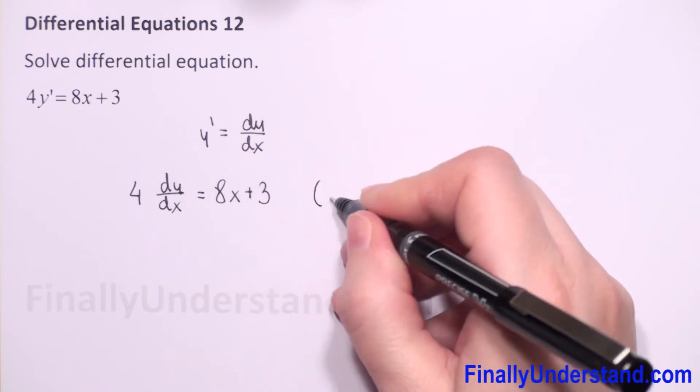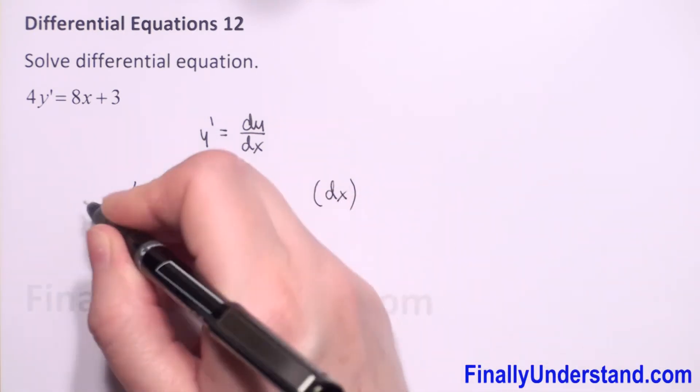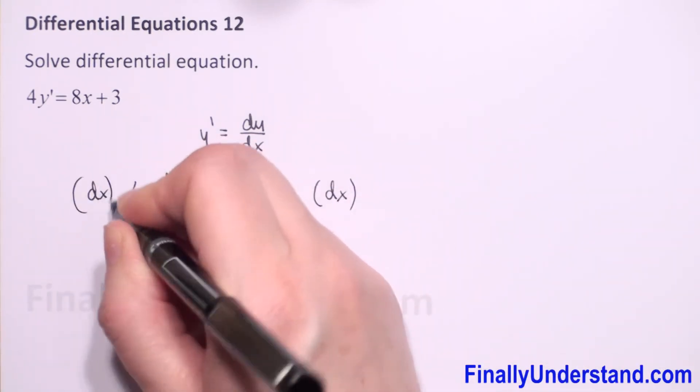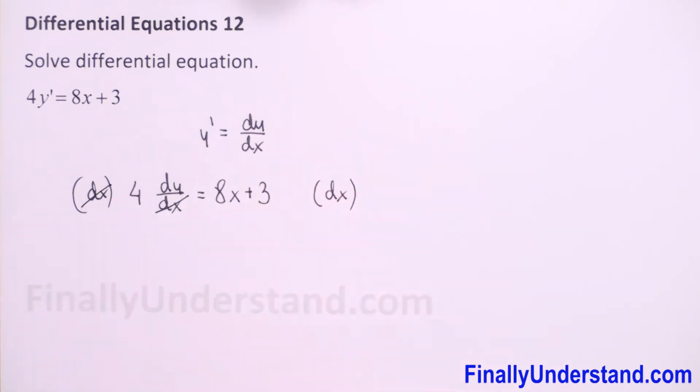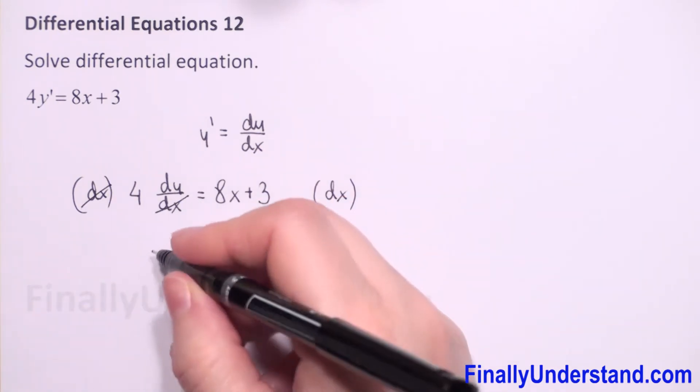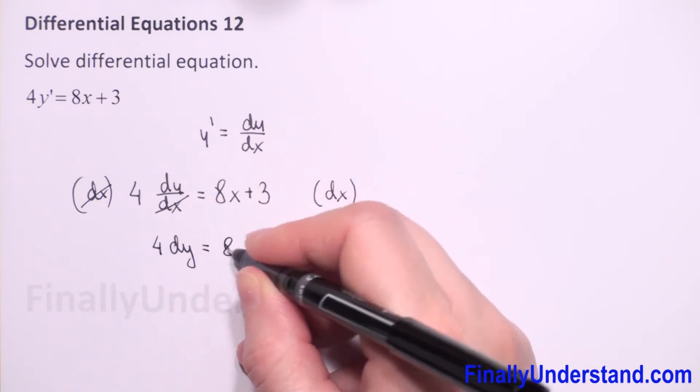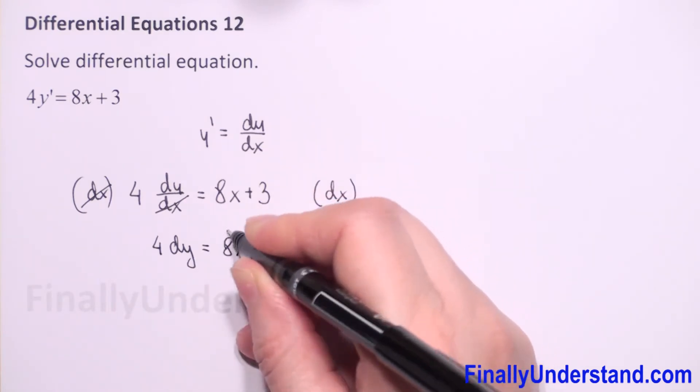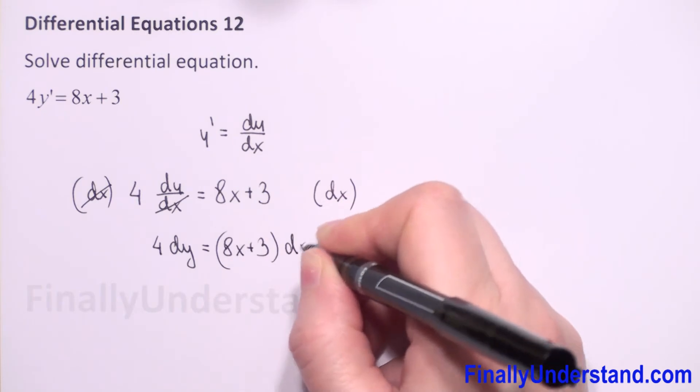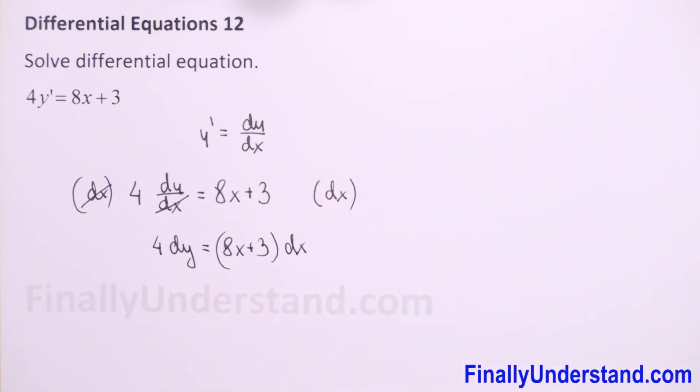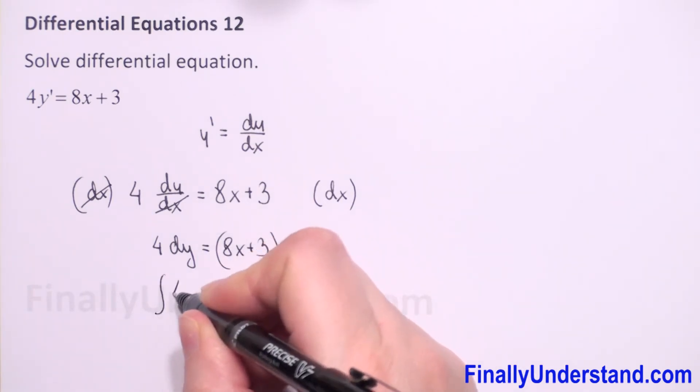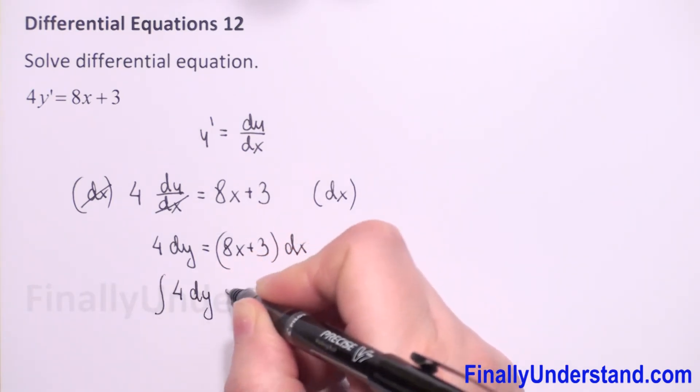Next, because we treat dy over dx like a fraction, we will multiply both sides by dx. dx and dx we can reduce, and we will have 4 dy is equal to 8x plus 3 times dx.